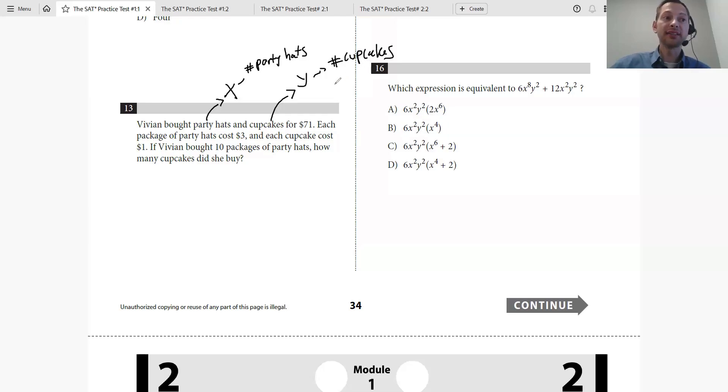Then I can say that $3 per party hat times X, which are the number of party hats, plus $1 for each cupcake times Y equals $71. So I'm just writing it out there.